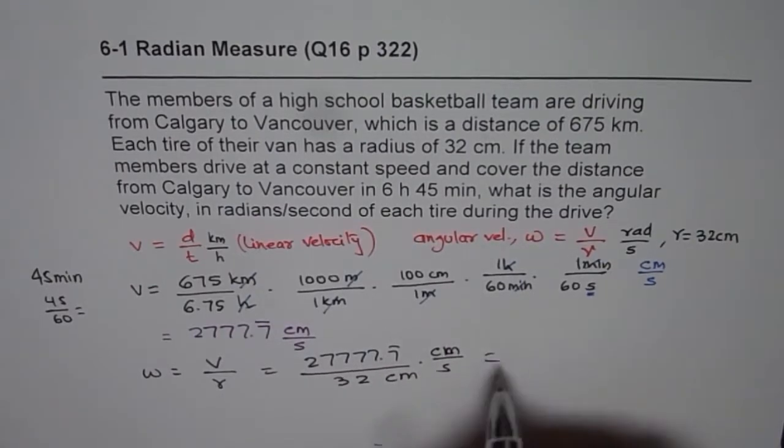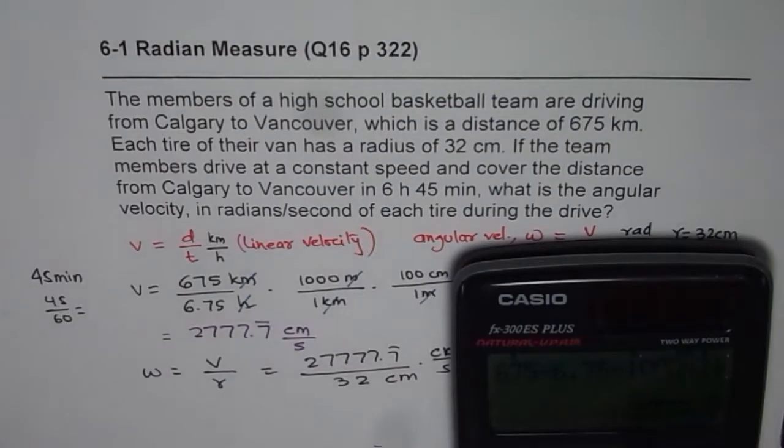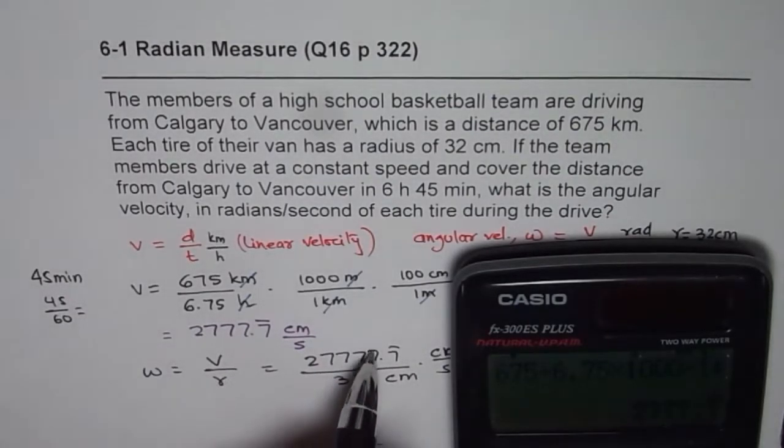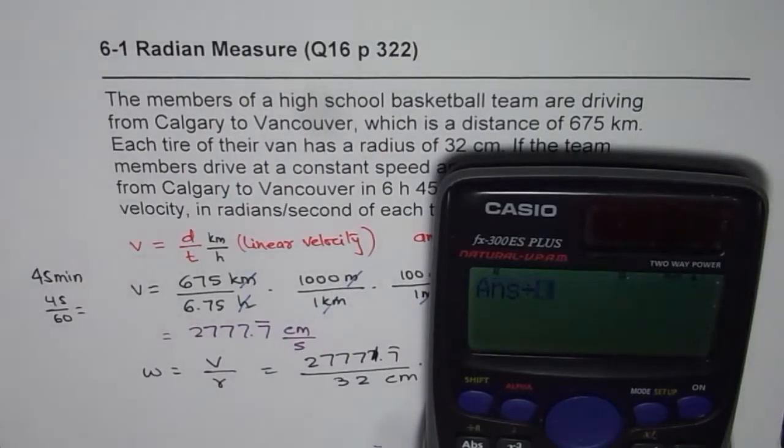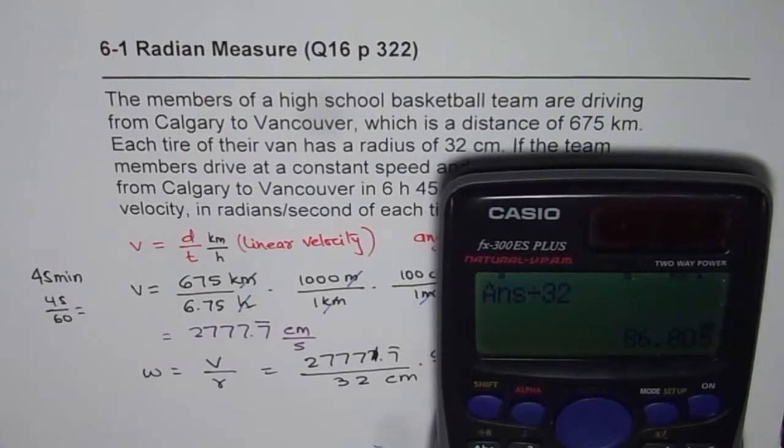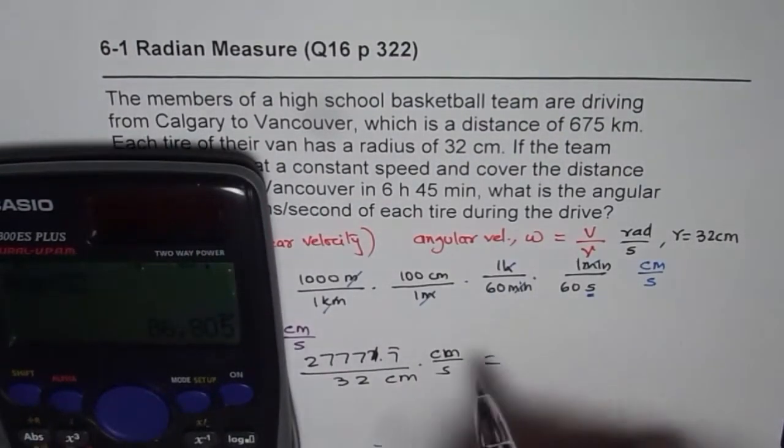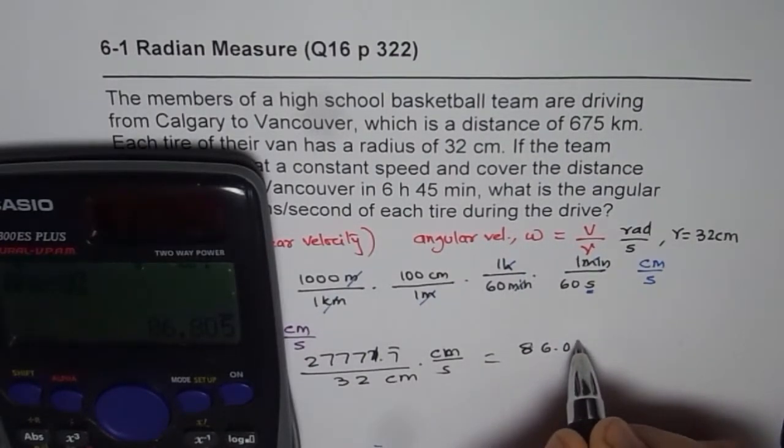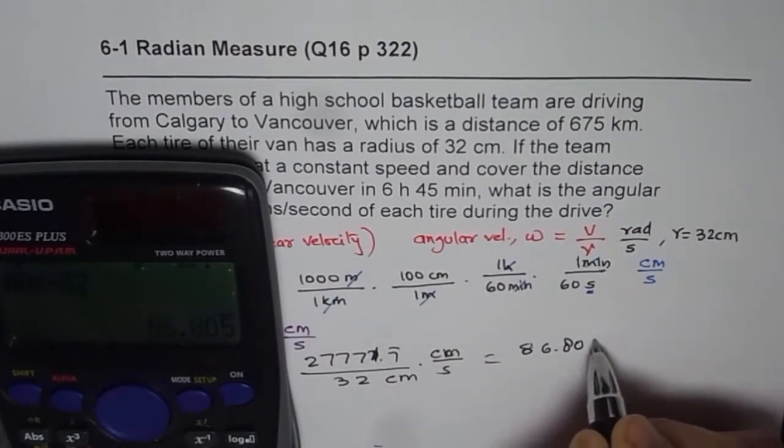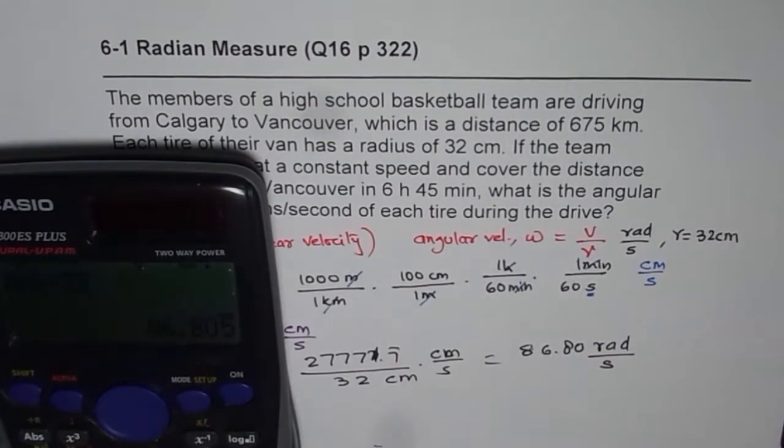Once we do that, we get our answer. I already have that number. It was 2777. Divide this by 32. I am not very good in calculations, so you may need to do the calculations yourself. When you divide this by 32, you get 86.880 radians. Radians is a ratio. Radians per second. So that is the angular velocity for the given question.